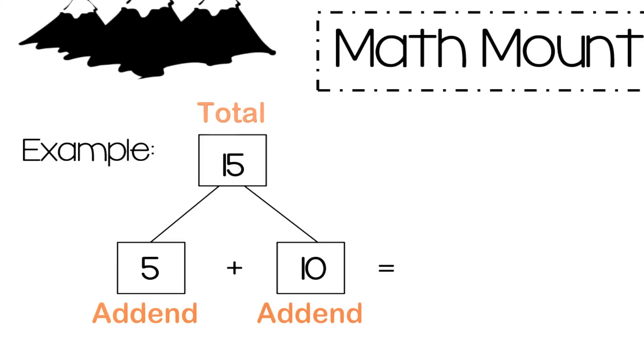Here is the example that we can take a look at. The two addends are 5 and 10, and the total at the top of the mountain is 15. If we add 5 and 10 together, what do we get? We get 15, which is the total. So the two addends added together equal the total.